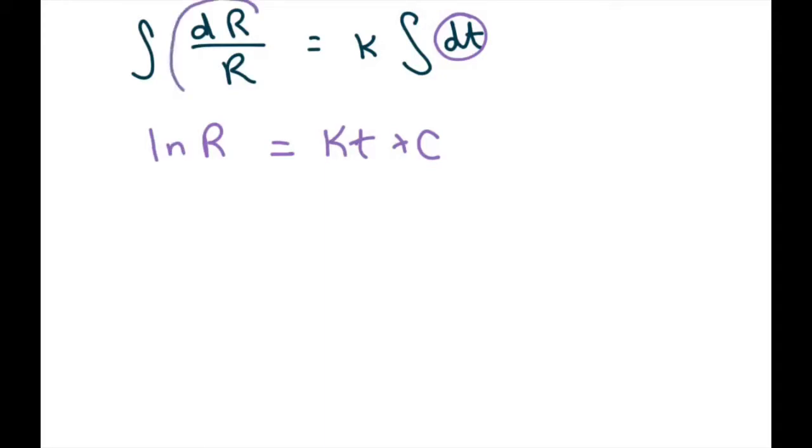Now we're going to integrate both sides. So when you integrate both sides you get dr over r equals k dt. So when you integrate this you're going to get kt because the antiderivative of dt is t plus c and this is ln of r.